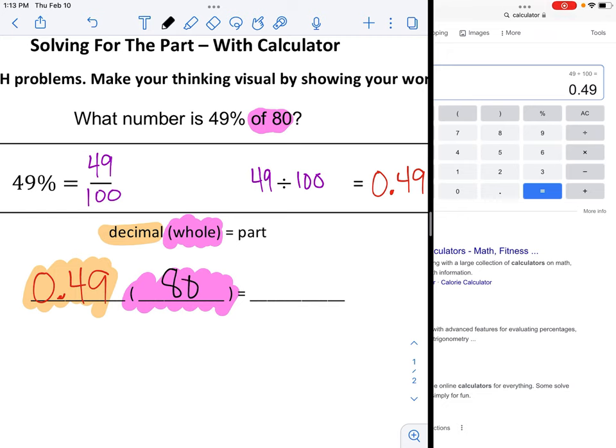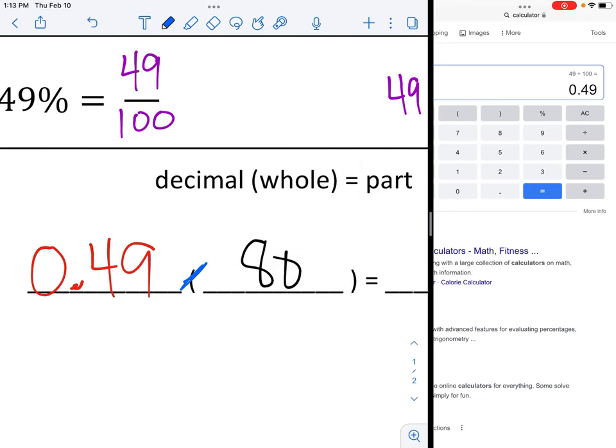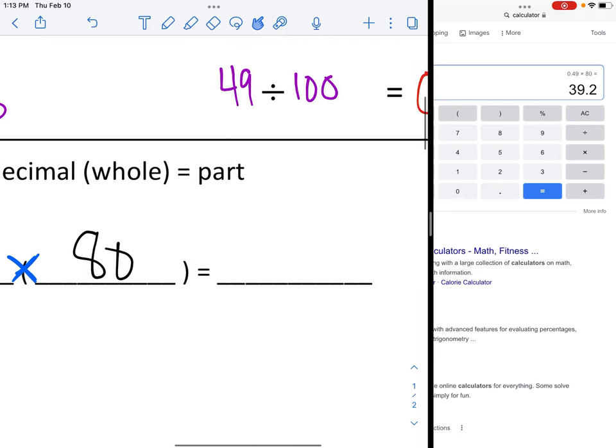All right, so now to find my answer, I'm going to multiply these together. Remember in math, when things are smooshed together, it means times. So here we go. Oh, it still says 0.49. Great. I can just put in times 80 equals 39 and 2 tenths.